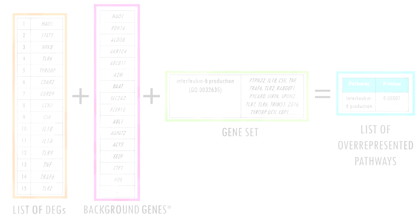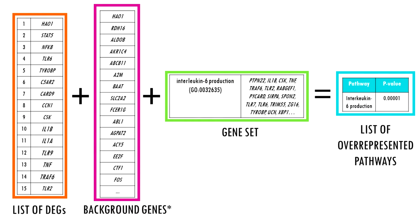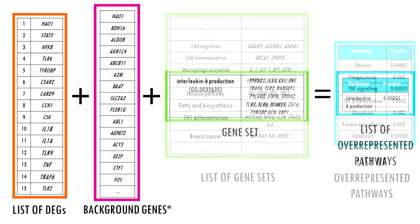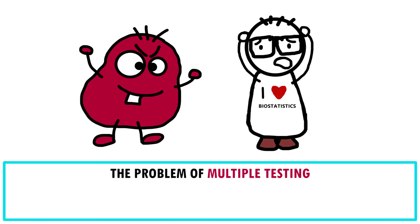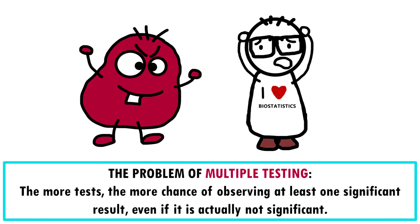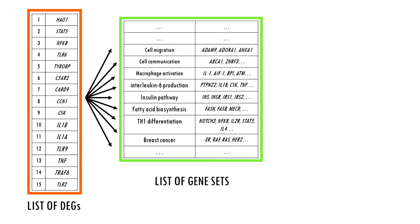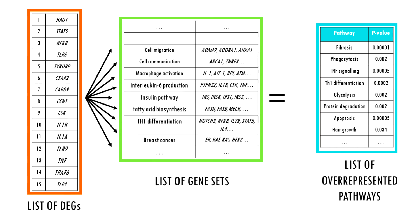Pathway enrichment analysis summarizes a long list of genes to a shorter list of pathways with their p-values. It does this not with one but with thousands of pathways, and this brings us to a big problem called multiple testing. Because you are repeatedly testing many pathways, some pathways will get apparently significant p-values just by chance, so we might get results that are unexpected or just don't make any sense.